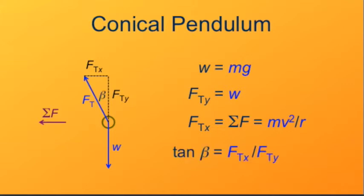Also we can link the two components of this tension by trigonometry. The tangent of the angle beta is equal to the horizontal component of the force divided by the vertical component of the force. We can see that because it's opposite over adjacent for this right triangle.